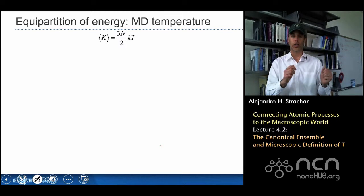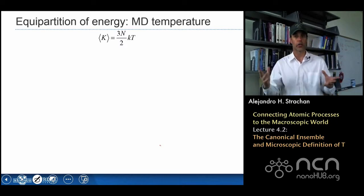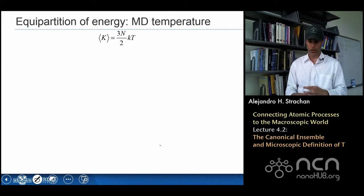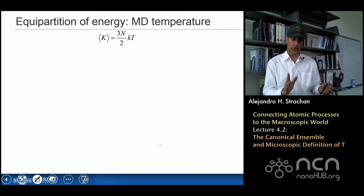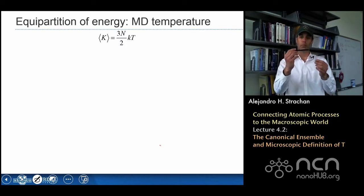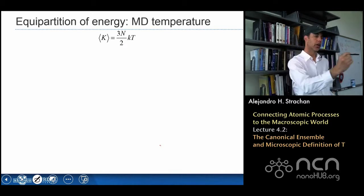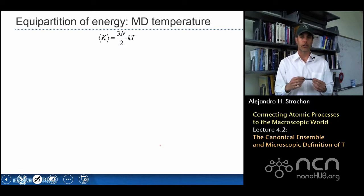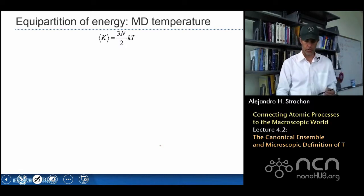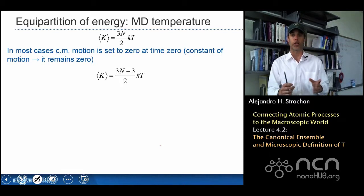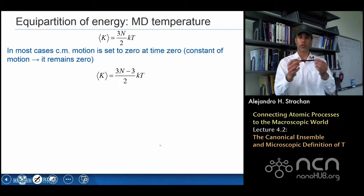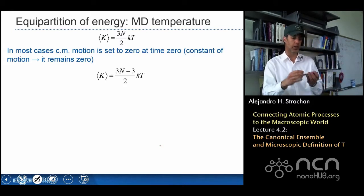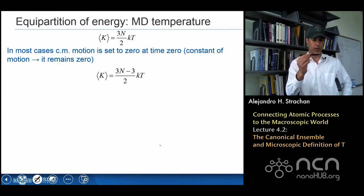This is very important because the average kinetic energy is something I can calculate from an MD simulation — I know positions and velocities as a function of time. I can do a time average of the kinetic energy and use this relationship to convert it to temperature. That's one of our goals for the week: how to compute temperature or any other thermodynamic property from a molecular dynamics simulation. Note that if the whole system moves with a constant center-of-mass velocity, that doesn't contribute to temperature — collective motion is a constant of motion.